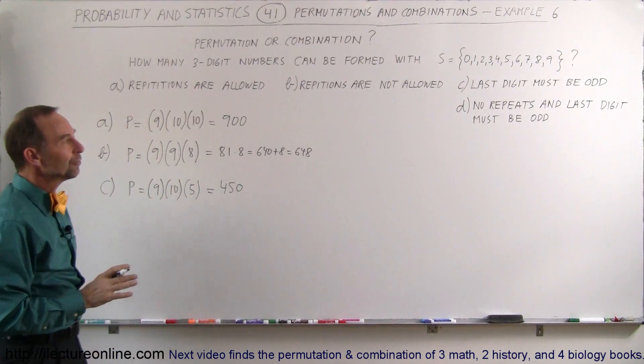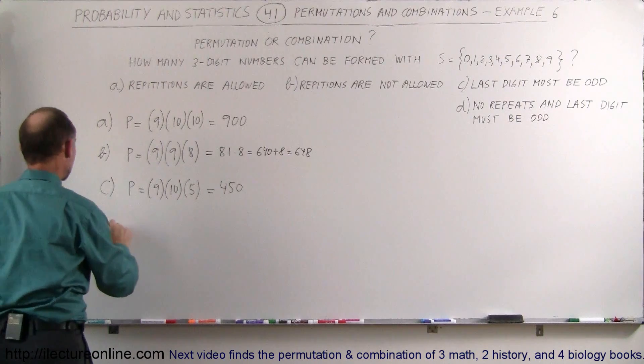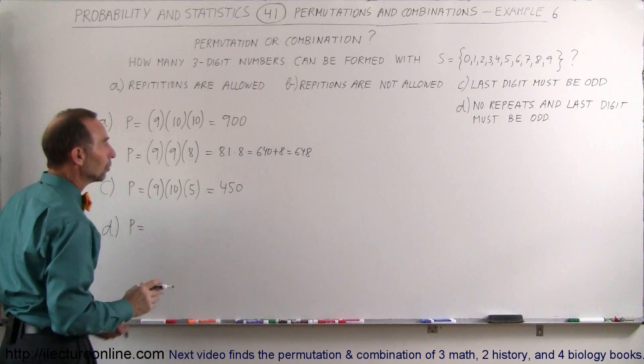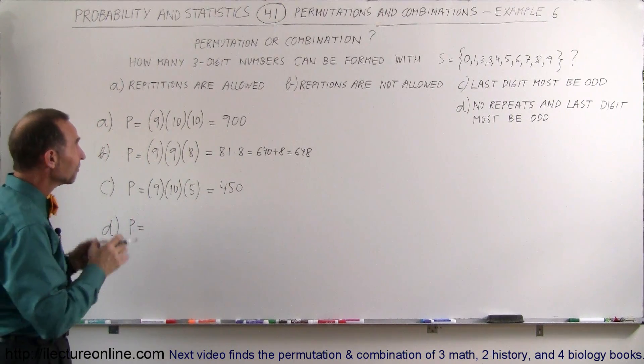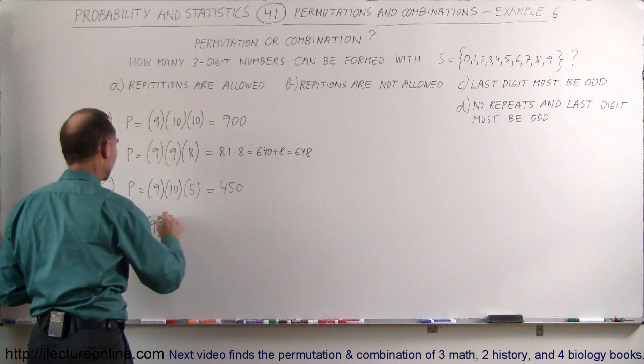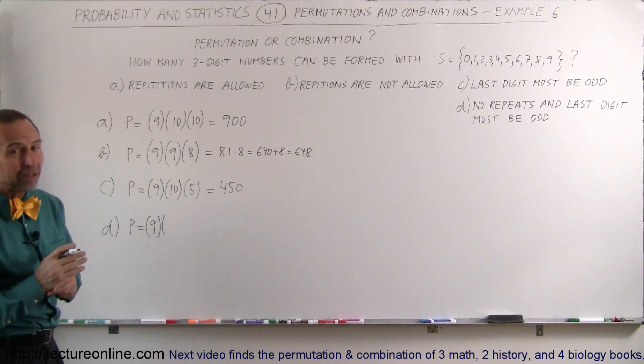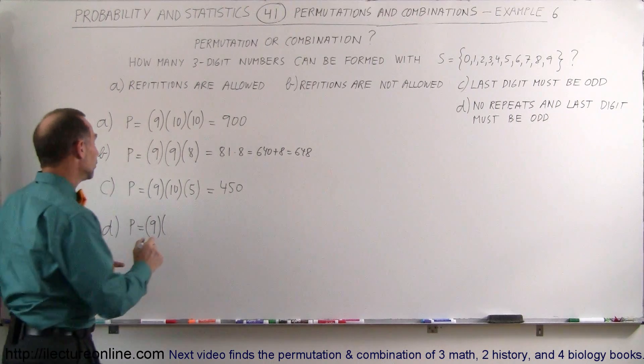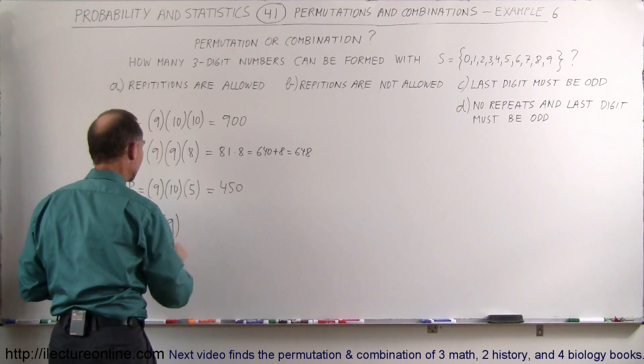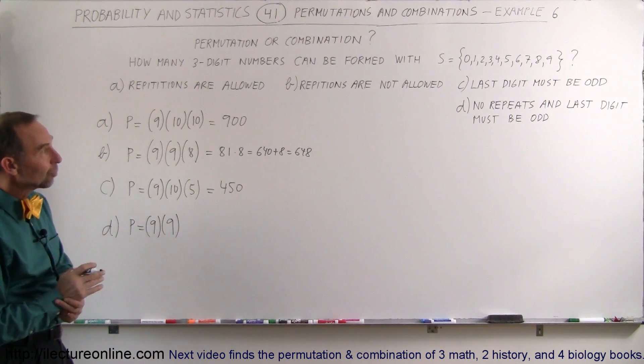Now what about if you cannot have any repeats and the last digit must be odd? So part D, the number of permutations is equal to, again for the first one, you can have 9 possibilities. So 9 because it cannot be a 0. For the second digit, since you cannot have a repeat, other than that it can be anything you want, you can have a possible 9 numbers you can put in here because you can't repeat whatever you had in the first one.